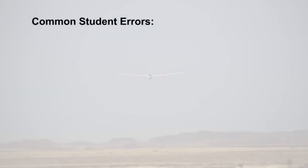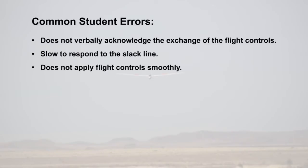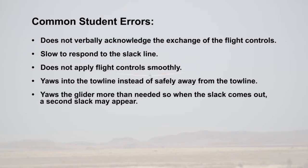Common student errors include: the applicant does not verbally acknowledge the exchange of flight controls; slow to respond to slack line; does not apply flight controls smoothly; yaws into the tow line instead of safely away from the tow line; or yaws the glider more than needed, so when the slack comes out, a second slack may appear.